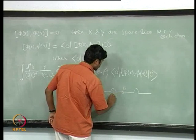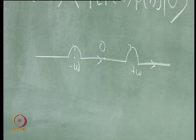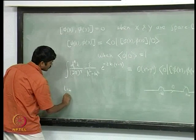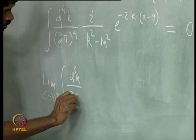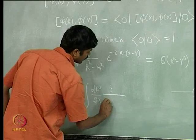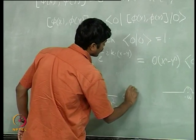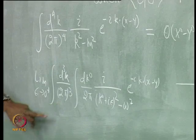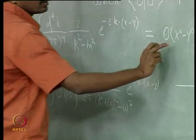The contour passes below the poles at k_0 = ±ω. Equivalently, we can use the epsilon prescription and evaluate this integration by considering the limit epsilon → 0+ of the integral d^3x d^3k / (2π)^3 dk_0 / (2π) times i / ((k_0 + iε)^2 - ω^2) times e^{-ik·(x-y)}. When we evaluate the k_0 integration, this turns out to be equal to the retarded Green's function expression.